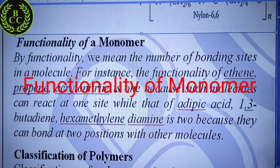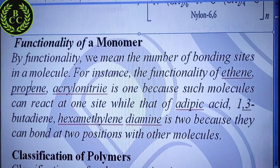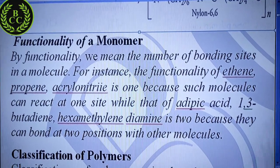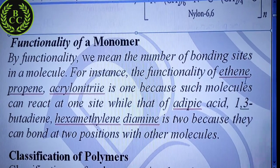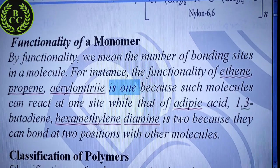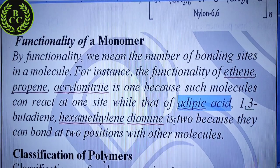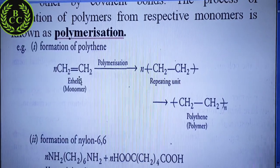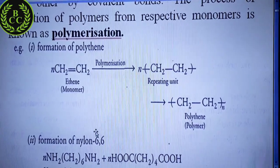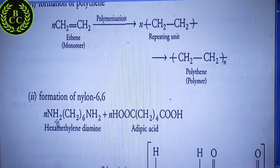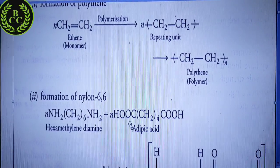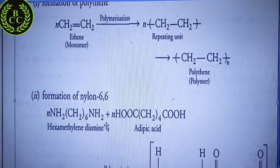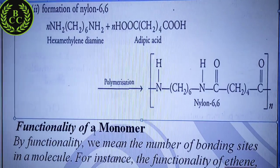Functionality of monomer — this is a board examination topic. By functionality, we mean the number of bonding sites in a molecule. For instance, the functionality of ethene, propene, and acrylonitrile is 1, because the molecule bonds on one side. And adipic acid, 1,3-butadiene, and hexamethylenediamine have a functionality of 2, because they can bond at 2 positions with other molecules. So if the bonding side is 2, functionality is 2; if bonding side is 1, functionality is 1.